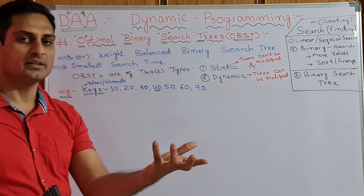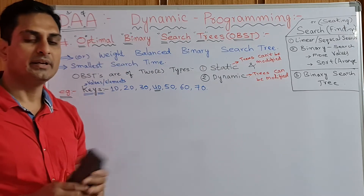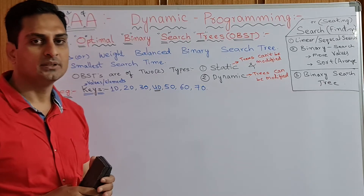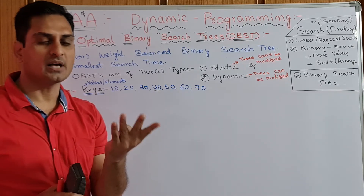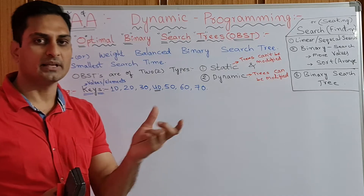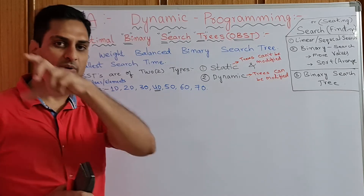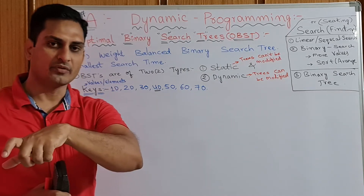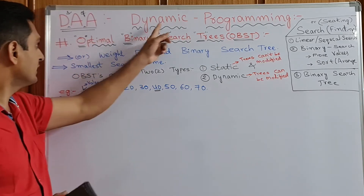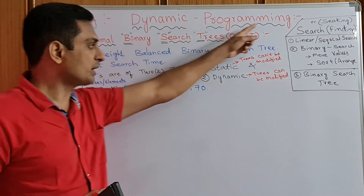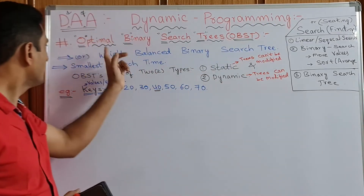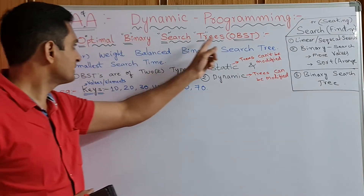Before designing a software, we documentize algorithms, then we will type programs in C, C++, Java, .NET, Python, or any programming language, then the software will be designed. So before designing software, we documentize algorithms. Dynamic programming is one of the technique methods, from which optimal binary search tree is a topic.